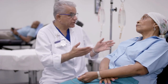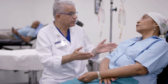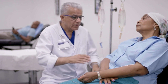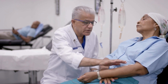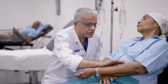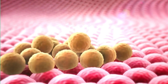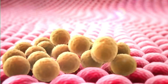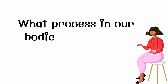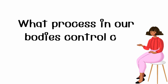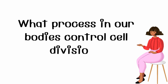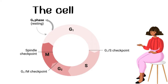Ever wonder what methods your body has in place to prevent cancer? As we know, cancer is an uncontrollable growth and division of cells. Do you know what processes in our body control cell division? If you guessed the cell cycle, then you are correct.